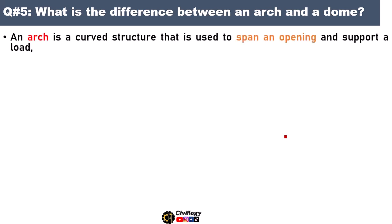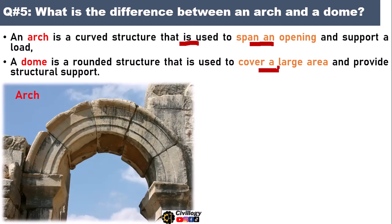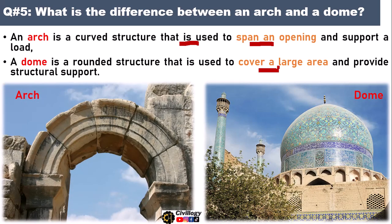Question number five: what is the difference between an arch and a dome? An arch is a curved structure that is used to span an opening and support a load. Whereas a dome is a rounded structure that is used to cover a large area and provide structural support, as you can see in these two pictures.